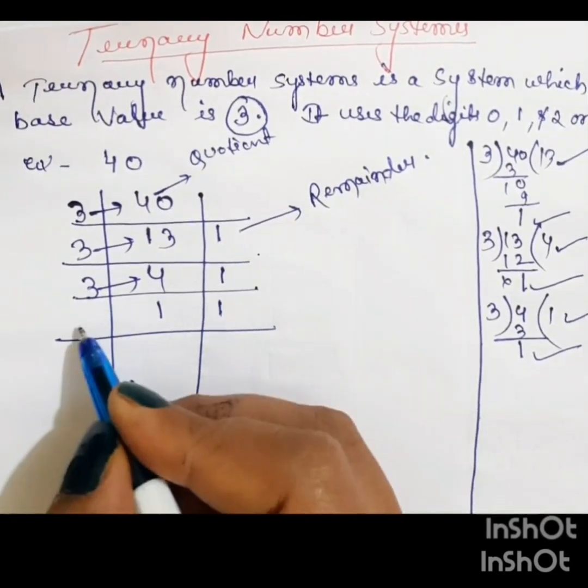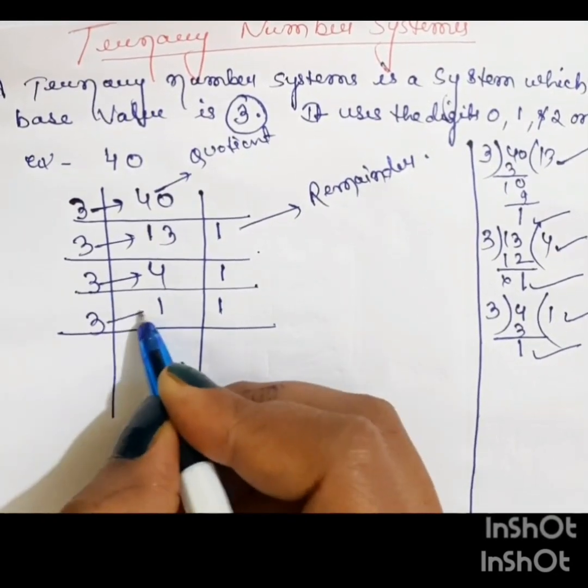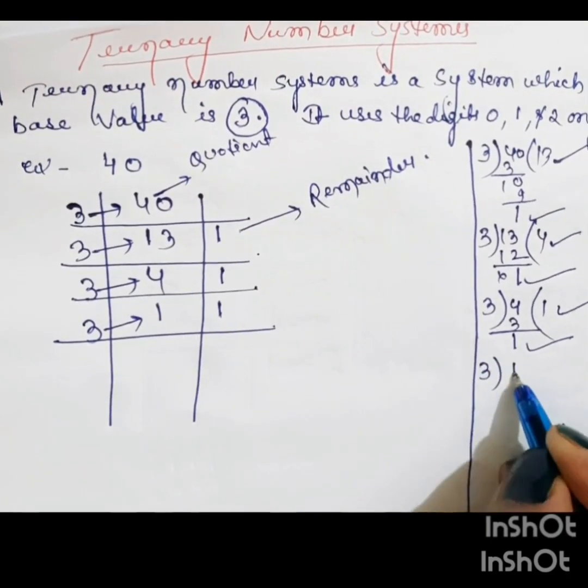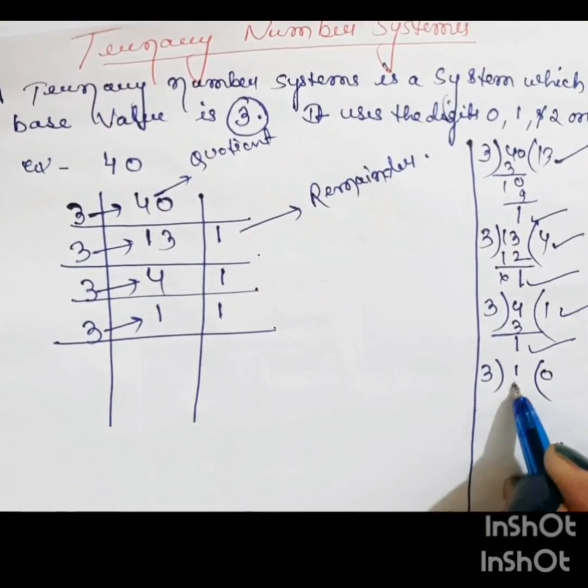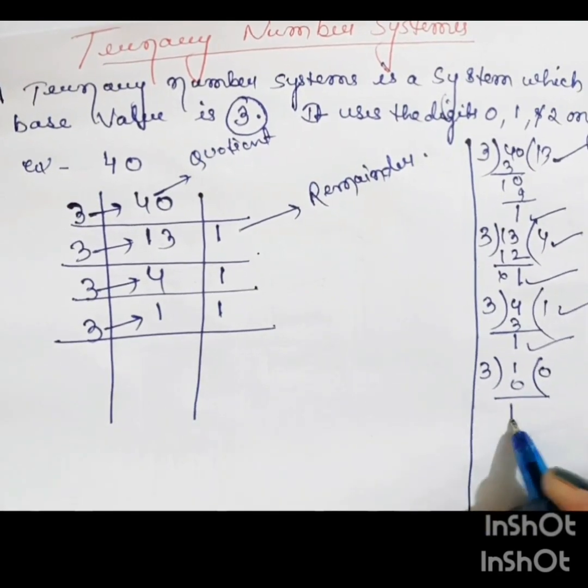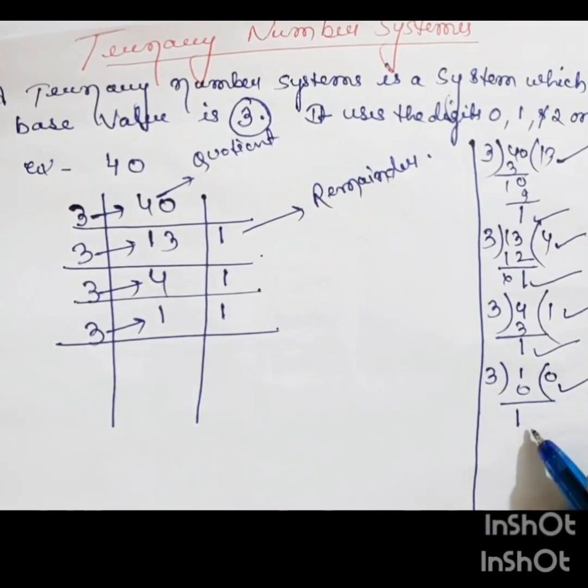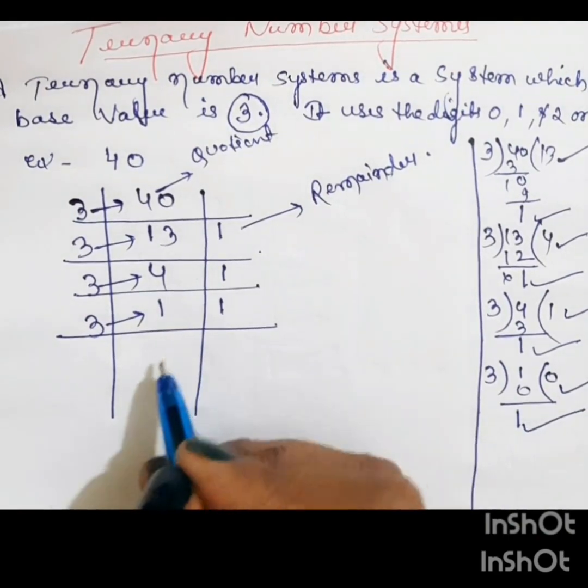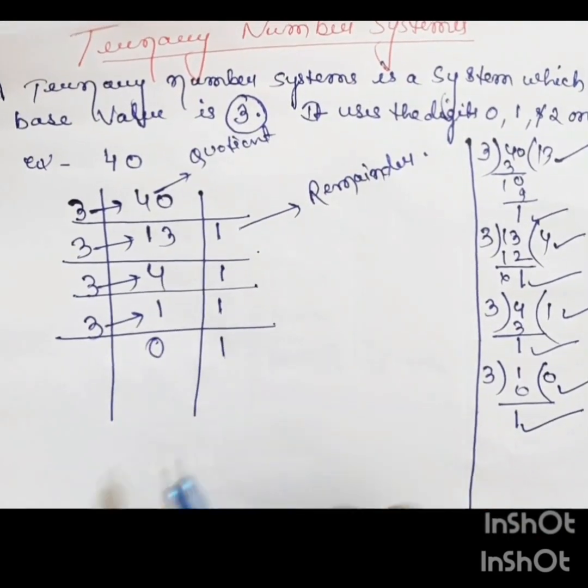And last, 3 divided 1. 0 is quotient. 1 is remainder. Put there. 0 is quotient. 1 is remainder.